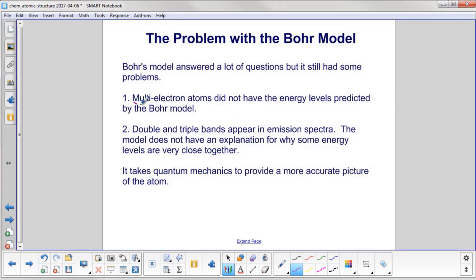Number one, multi-electron atoms - helium, beryllium, lithium, iron - didn't have the energy levels that were predicted by the Bohr model. That's bad.